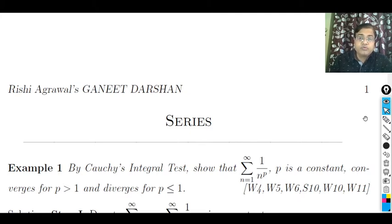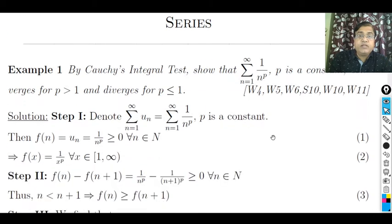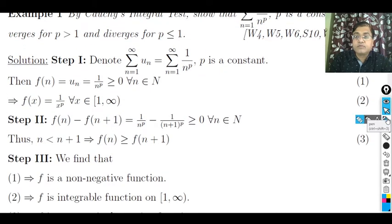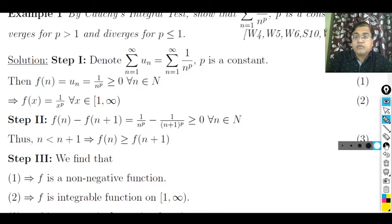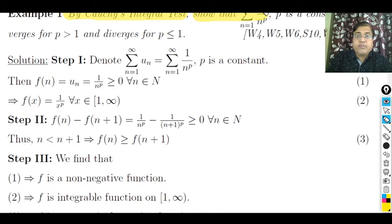Now let us solve some examples. First example: by Cauchy's Integral Test, show that the series Σ(1/n^p), where n varies from 1 to infinity and p is a constant, converges for p greater than 1 and diverges for p less than or equal to 1.